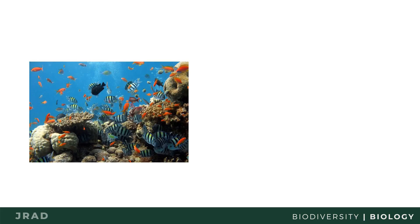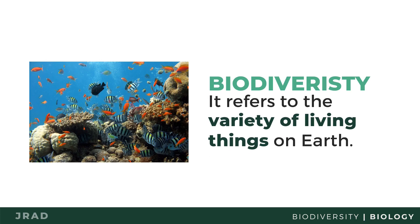Various types of organisms have evolved throughout the history of the Earth. The variety of species present on the planet is diverse, and more and more species are still being discovered yearly. Biodiversity describes the variety of life on Earth, and it can be described according to the different levels of organization.